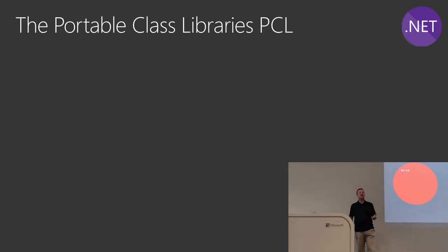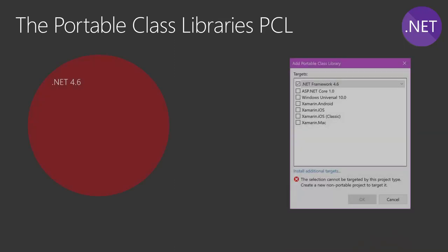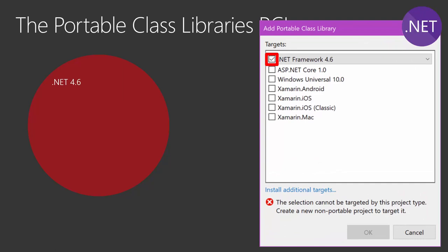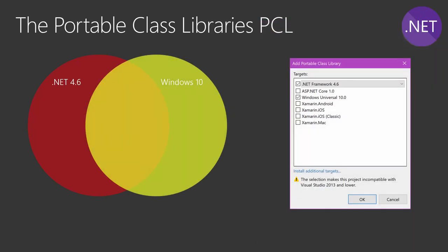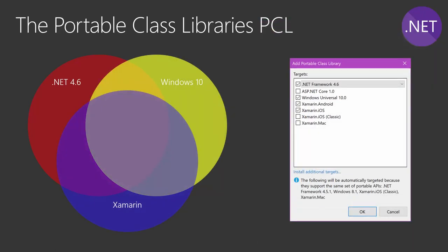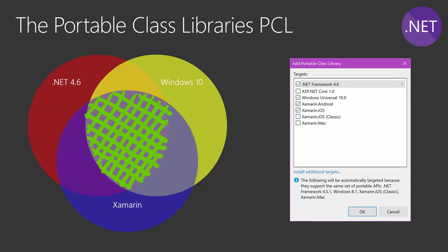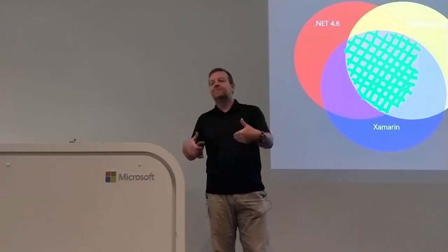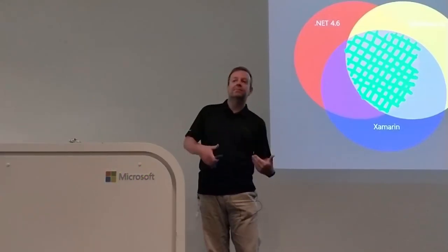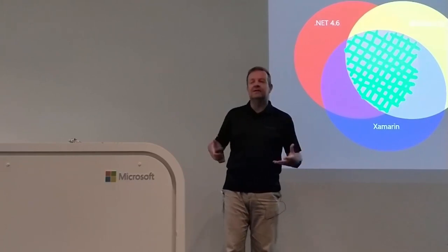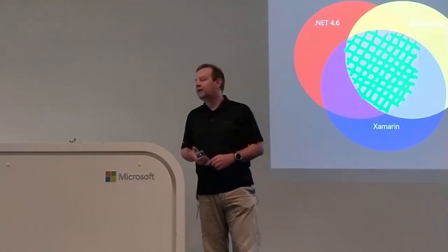With Portable Class Libraries, the idea was to create a new class library and then select the platforms on which it's going to run. For example, you could start with .NET Framework 4.6, then add Windows 10, then add Xamarin. The result is the intersection of those platforms, because there are subtle differences between the .NET implementations — the full .NET, the .NET for Windows 10, and the .NET for Xamarin. Some classes are missing, or some have more APIs than others.